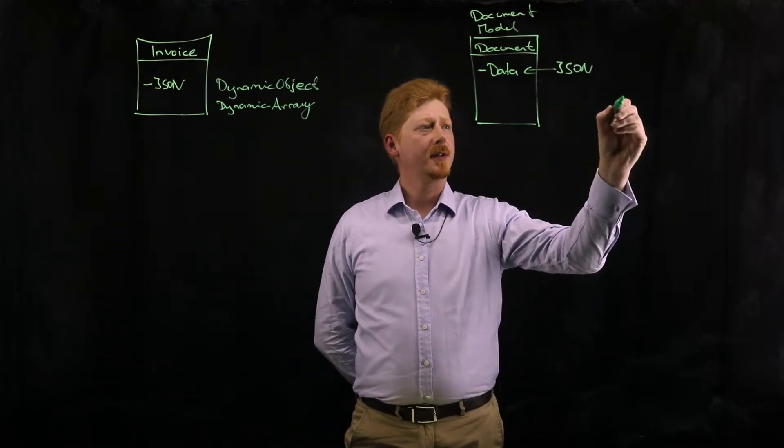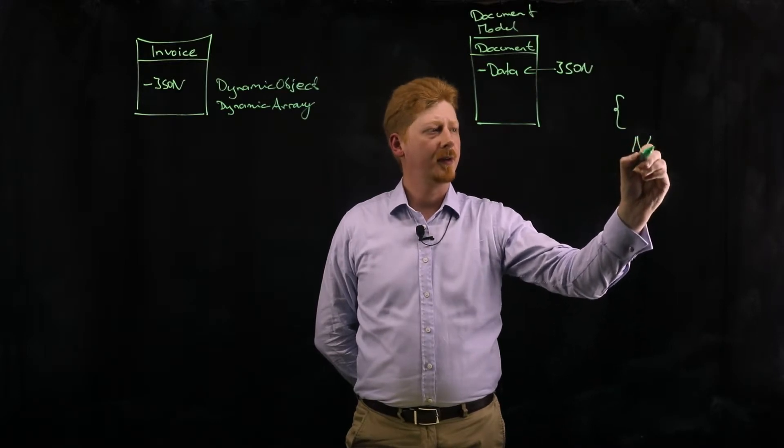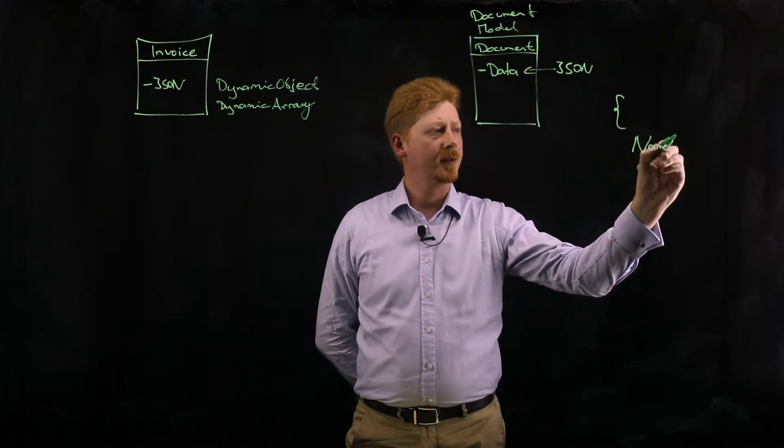Let's say my JSON stream is a fairly simple one, just as an object with a name property.